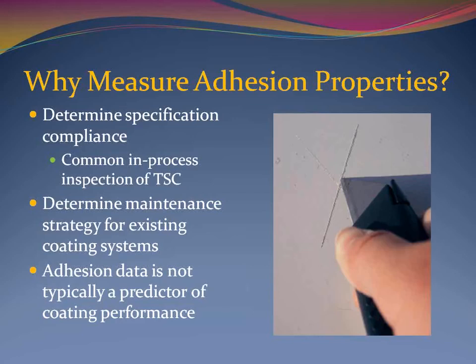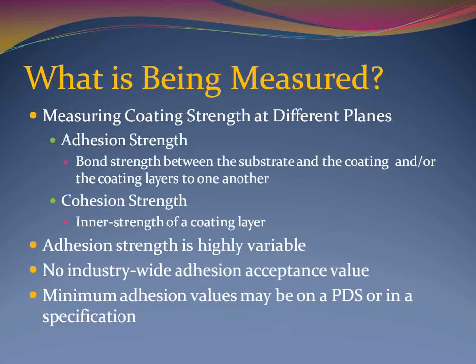In fact, both systems may perform equally even if the adhesion values are dissimilar. However, while the coating system must remain attached to the substrate in order to protect it, the degree of attachment can vary. When you perform an adhesion test, you are measuring the strength of a coating at several different planes. First, you are testing the adhesion of the coating system to the substrate. Second, you are testing the adhesion of the coating layers to each other if there is more than one layer. In both cases, you are testing the adhesive strength or the bond of the layers to one another and to the substrate. Finally, when you perform an adhesion test, you are testing the inner strength of each coating layer, known as the cohesion or cohesive strength — the ability of each layer to hold itself together.